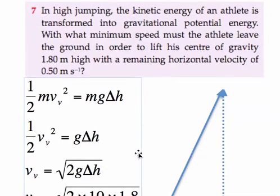Question seven in high jumping. So again the kinetic energy is being transferred into gravitational potential energy. What minimum speed does the athlete need to leave the ground to lift his centre of gravity 1.8 meters high? So again his kinetic energy is going to be transferred into gravitational potential energy.